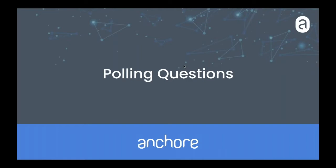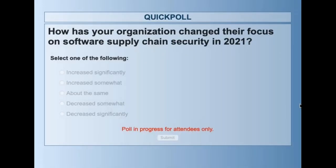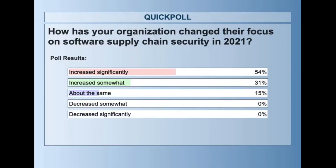The second polling question is: how is your organization changing their focus on software supply chain security in 2021? Based on what's been in the news, or maybe other initiatives you've had in place for a while, or previous attacks and breaches — is that causing your organization this year to increase your focus on this area, or decrease, or is it roughly about the same? Over half of you are indicating it's significantly increased your focus, about a third increased somewhat, 15% about the same, and nobody has noticeably decreased it.